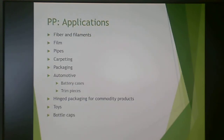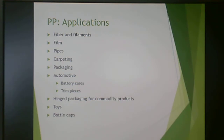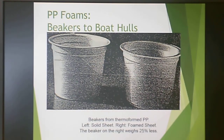We're in the application section — the home stretch for polypropylene. Polypropylene has very similar applications to polyethylene: fibers and filaments, films, pipes, lots of carpet — many carpet fibers are made from polypropylene. Also packaging, automotive trim, battery cases, hinged packaging for commodity products, toys, and bottle caps. Your bottle is probably PET but your bottle cap is probably polypropylene.